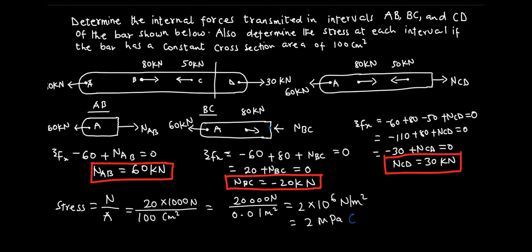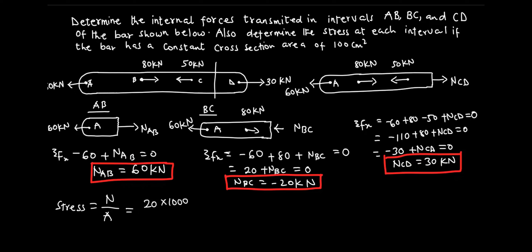Now let's do the same for the normal force N_CD. For N_CD, the force is 30 kilonewtons — that is 30 times 1000 — divided by the cross-sectional area of 100 cm squared, which is 0.01 meter squared.